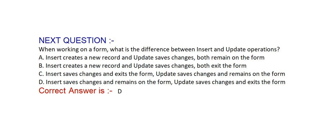When working on a form, what is the difference between insert and update operations? Option A: insert creates a new record and update saves changes; both remain on the same form. Option B: insert creates a new record and update saves changes; both exit the form. Option C: insert saves changes then exits the form; update saves changes then remains on the form. Option D: insert saves changes and remains on the form; update saves changes and exits the form. Correct answer is option D.